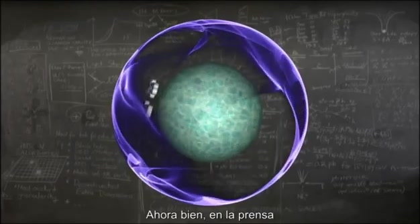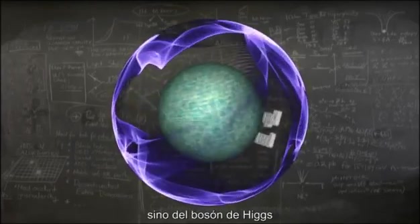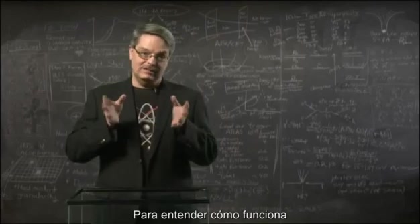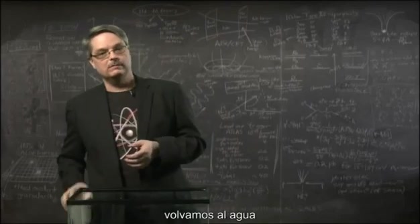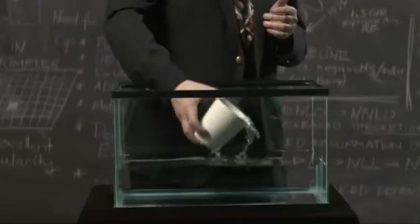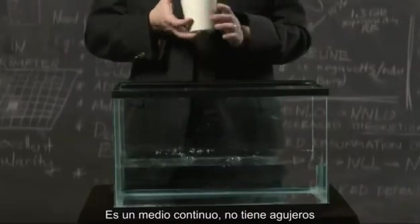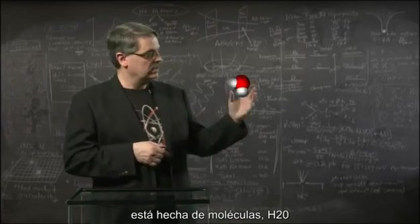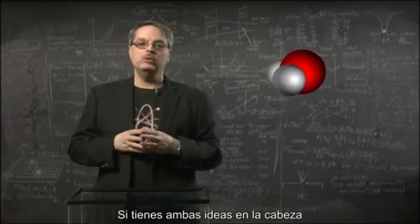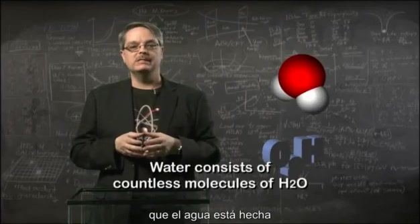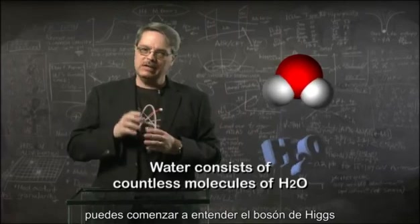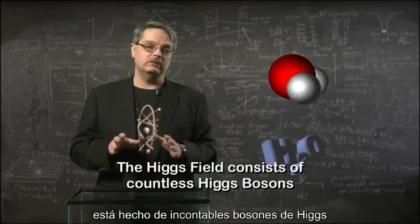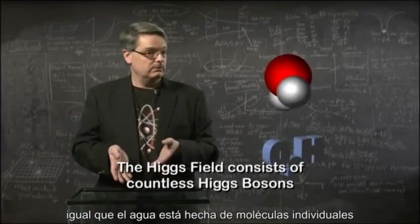Now, in the press, you don't hear about the Higgs field, but rather the Higgs boson. How are these two things related? The Higgs boson is the smallest bit of the Higgs field. To understand how that works, we should again return to water. Everyone knows what water is. If you're immersed in it, you know that water is everywhere — it's a continuous medium and there are no holes in it. We also know that water is made of molecules, specifically H2O. If you hold these two ideas in your head, with the realization that water consists of countless individual molecules, you can now begin to appreciate the Higgs boson. The Higgs field that gives subatomic particles their mass is made of countless individual Higgs bosons, just like water is made of individual molecules.